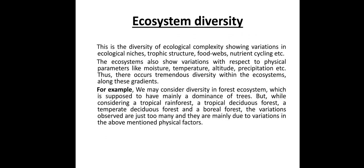It means within the ecosystem there should be some variation because of moisture, temperature, and altitude. These are the parameters which show variation within the ecosystem. So this is about the types of biodiversity. I hope you understand this class. Thank you.